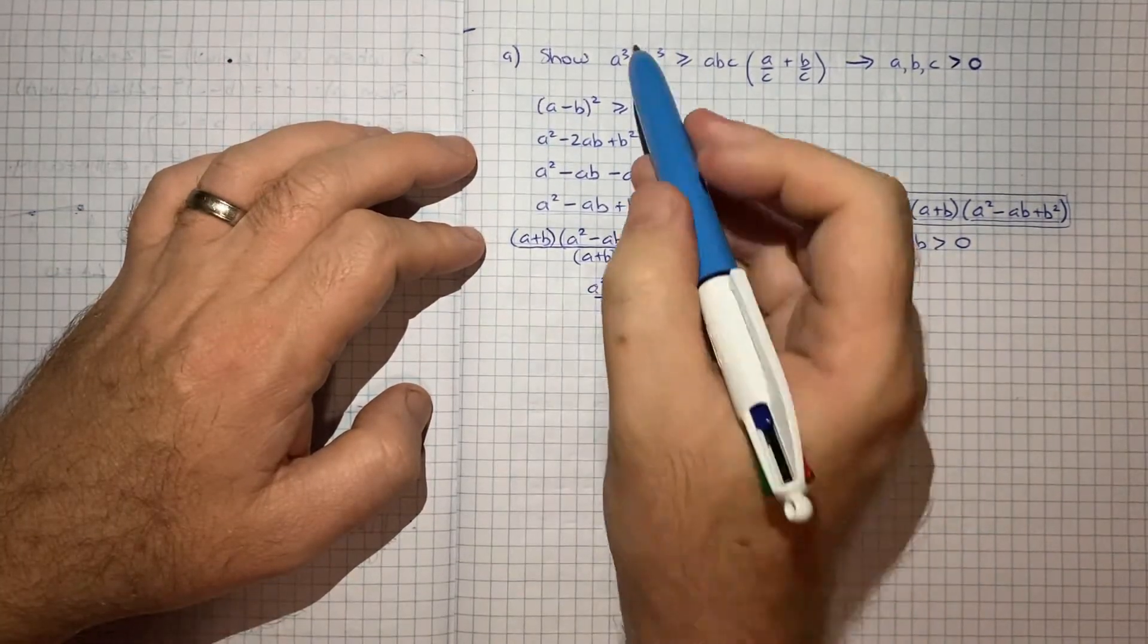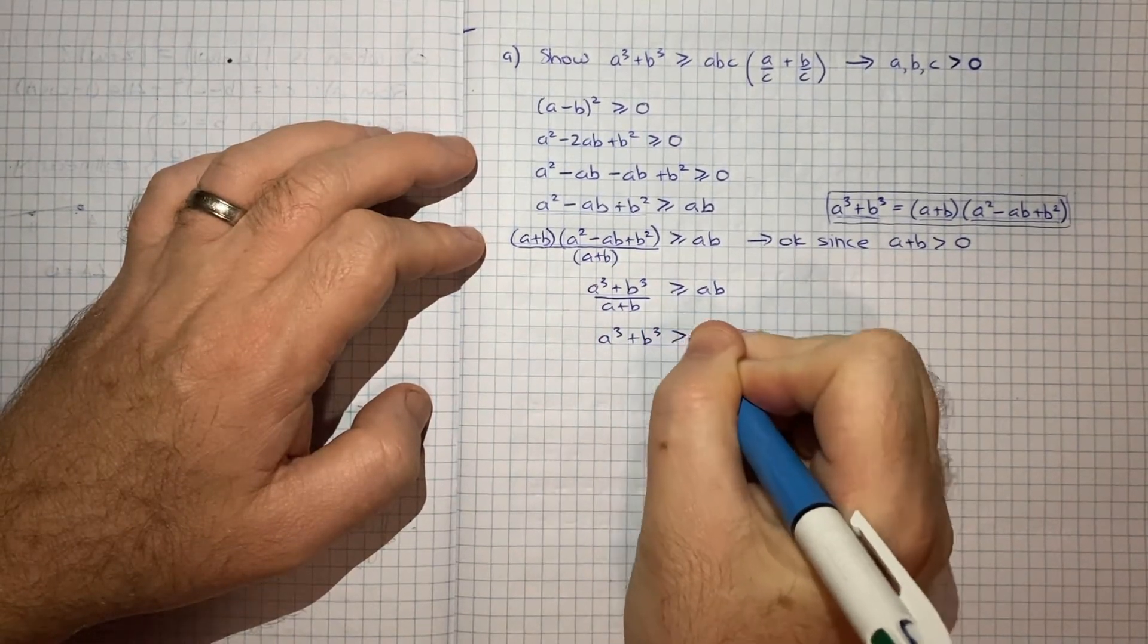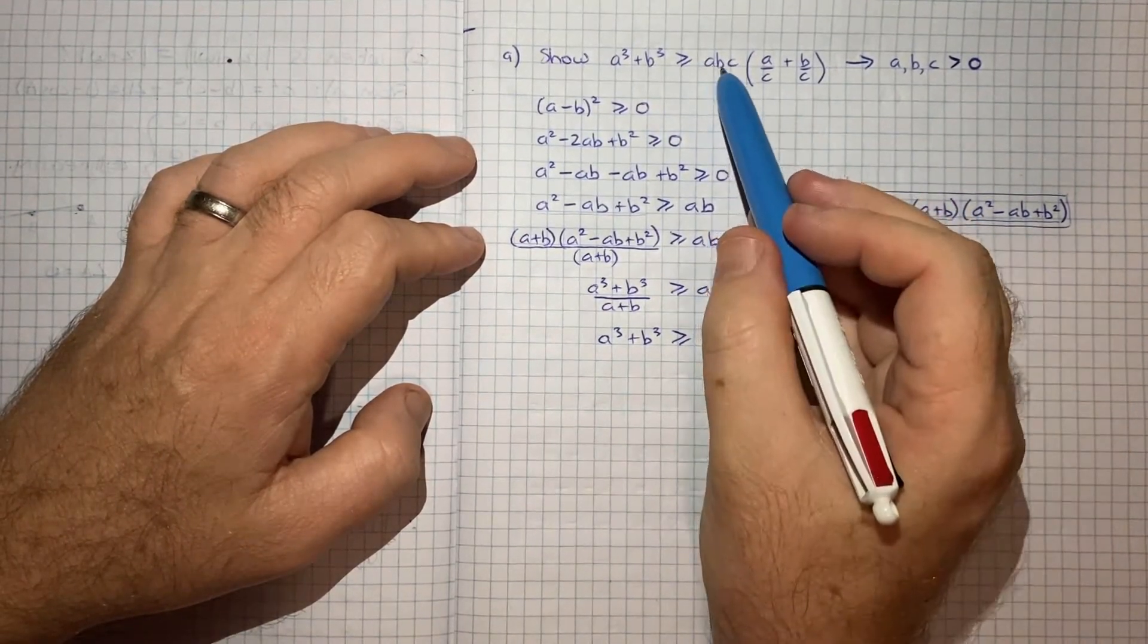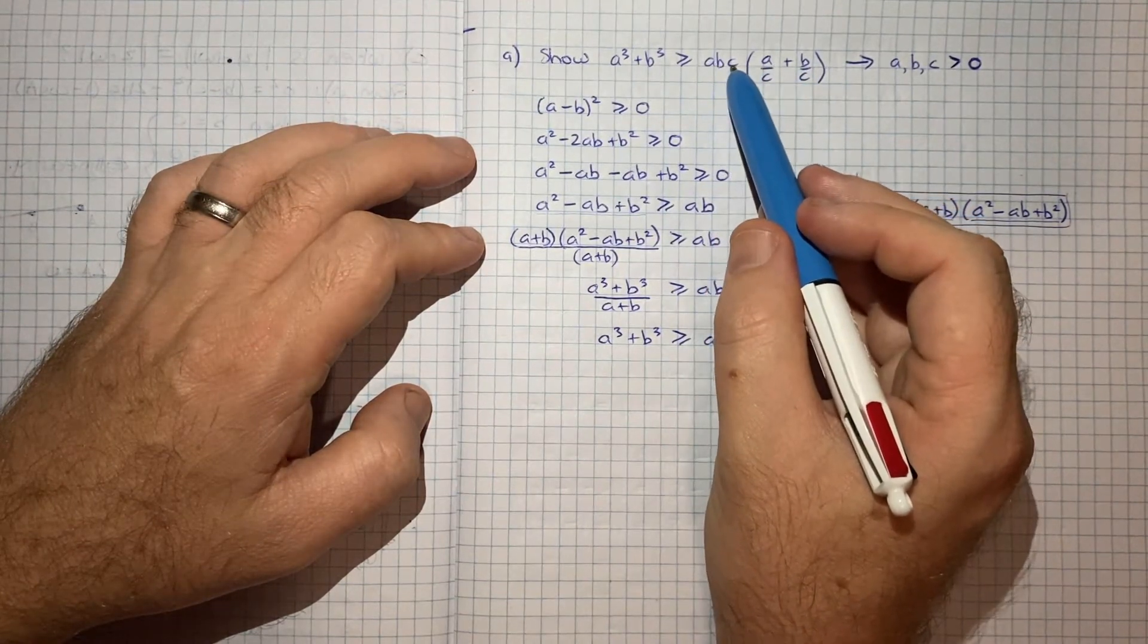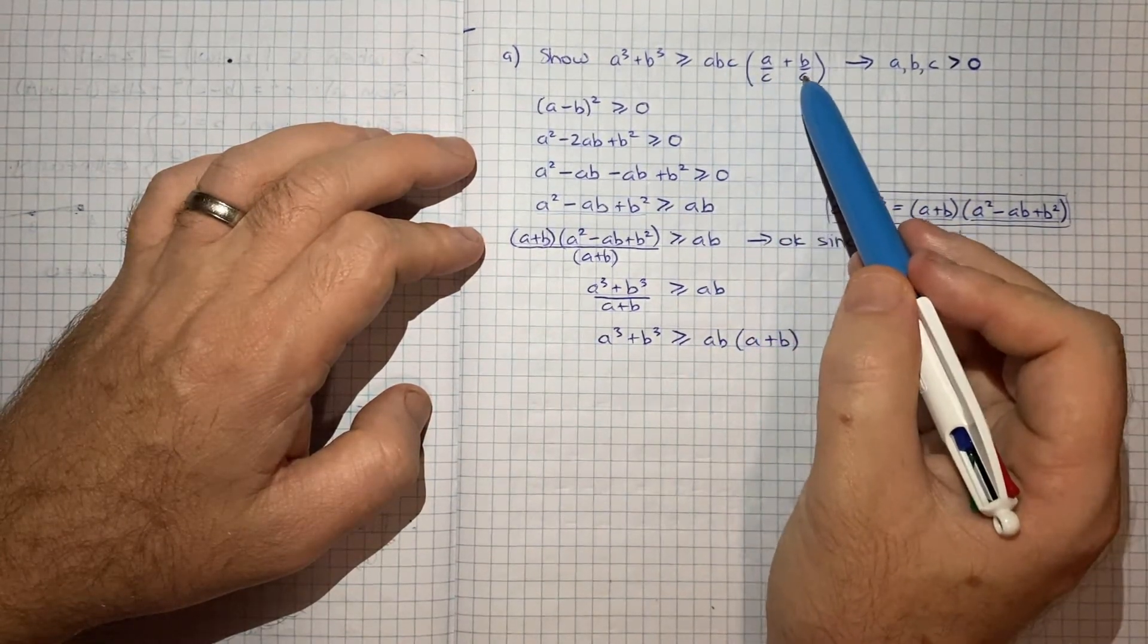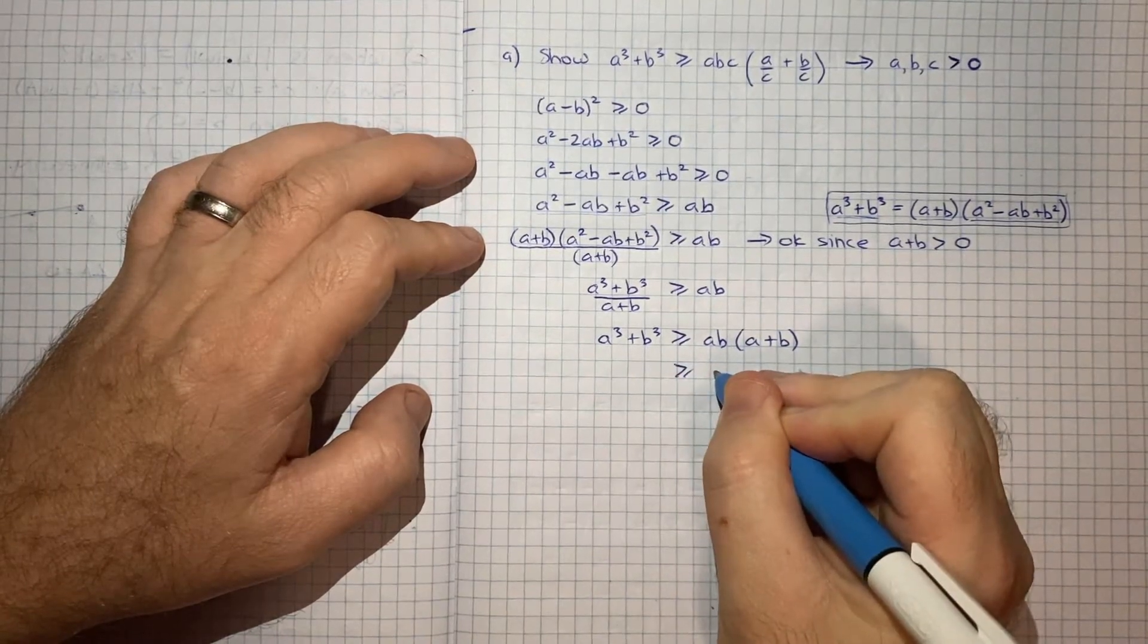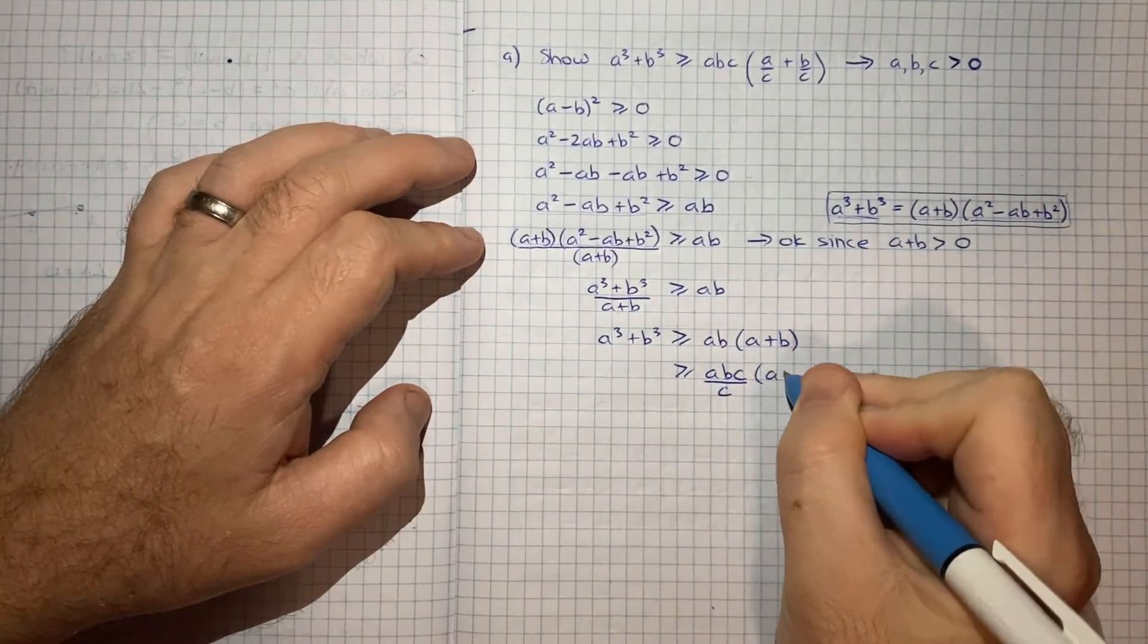And let's just bring up this ab, because we want a cubed plus b cubed all by itself. That's going to be greater than or equal to ab, a plus b. And we're really close here because we've got an a plus b here and an ab. The only missing link is c. But if you notice, we've got a c outside the bracket and a c under each bit. They effectively cancel. So we can actually just throw in a c divided by c. So we'll go abc divided by c, a plus b.